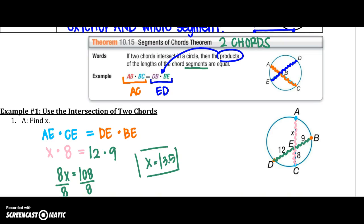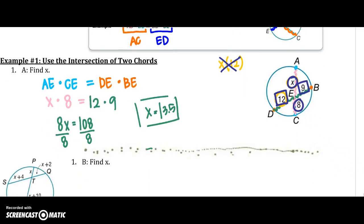What we don't want is, we don't want to multiply X times 12, because they are on different chords. So we don't want that. We want to keep it with the same chord. X and 8, 12 and 9.